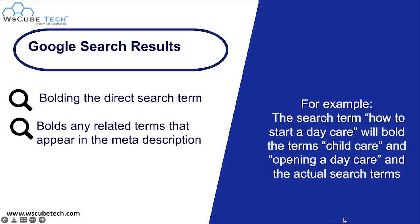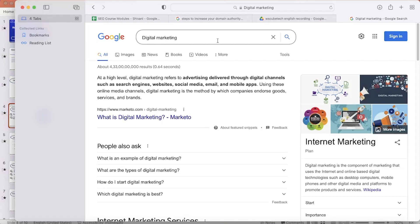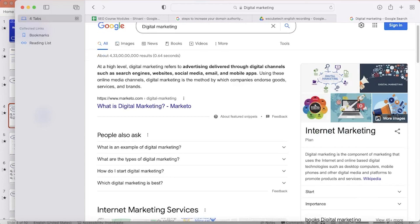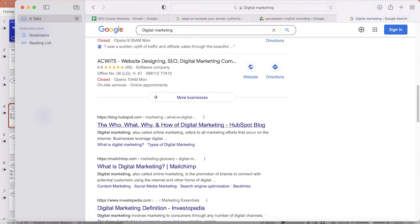Next is using Google Search Results. For a search term like 'how to start a daycare,' Google may also bold related terms like 'child care' or 'opening a daycare.' When you search any keyword, Google bolds the direct search term or related terms appearing in meta descriptions — this gives you ideas about related searches. For example, searching 'digital marketing' shows bolded terms like 'advertising' and 'delivering through digital channels such as search engines' and 'websites.'